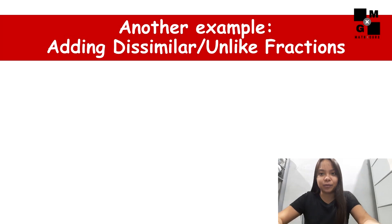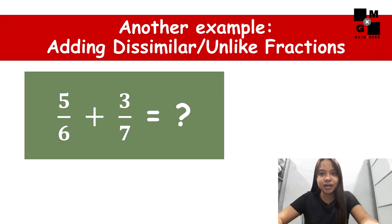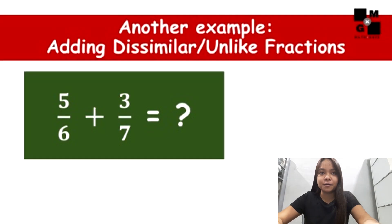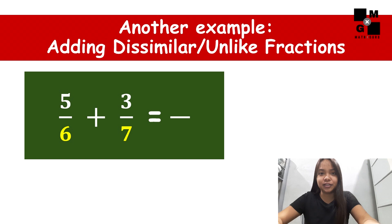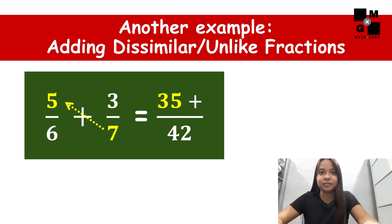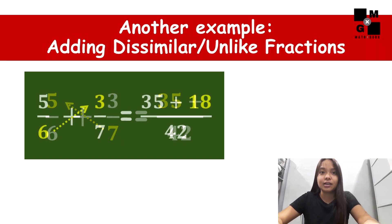Let us have another example. Again, I encourage you to solve it with me. First step, multiply the denominators. Six times seven is forty-two. Second step, cross-multiply. Seven times five is thirty-five. Then, cross-multiply again. Six times three is eighteen.